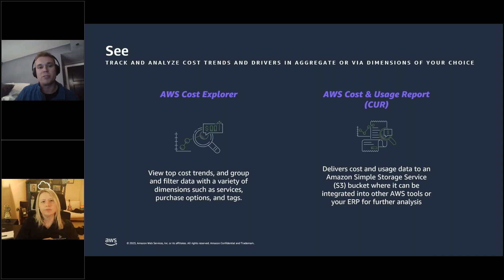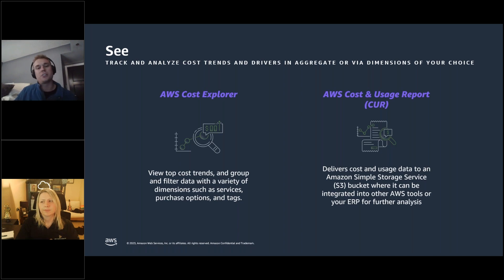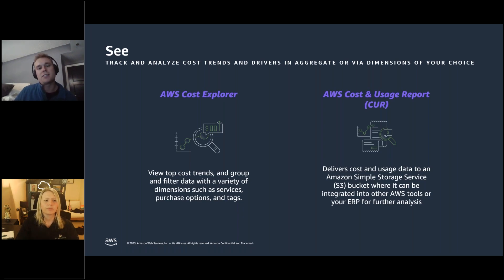The Cost and Usage Report is the most comprehensive set of cost and usage data available. It tracks AWS cost and usage and provides estimated charges associated with your account. Each report contains line items for each unique combination of products, usage types, and operations running within your accounts. You can customize the CUR to aggregate information by the hour, day, or month — making it the most granular level of cost information available.